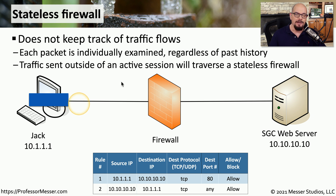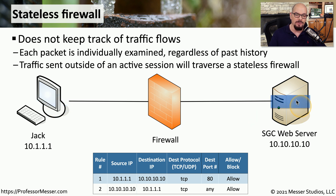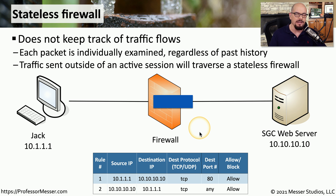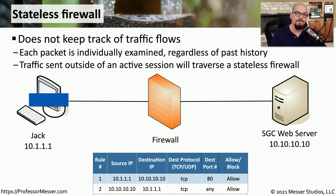Let's say an attacker now gains access to the SGC web server and wants to send some unprompted data into Jack's workstation. The SGC web server will send a packet of information. Since the firewall has no idea what the state of this flow might be, the only thing it can rely on is the firewall rule base. And this rule base does allow 10.10.10.10 to communicate to 10.1.1.1, Jack's workstation. So that information, even though it could be malicious, is allowed through the firewall.